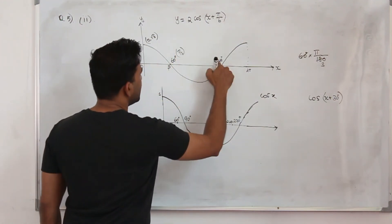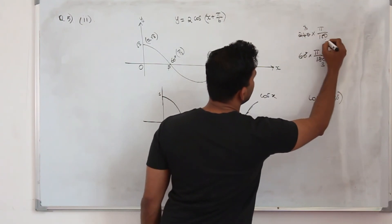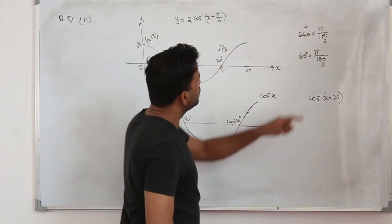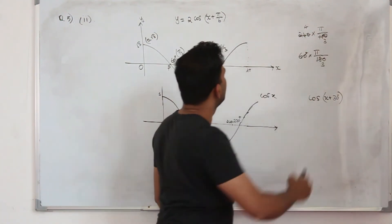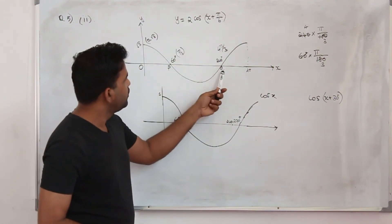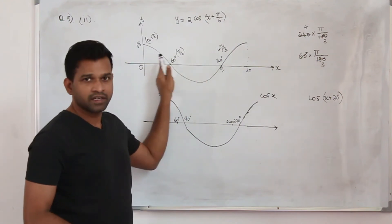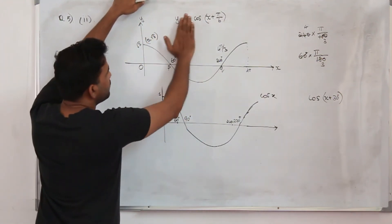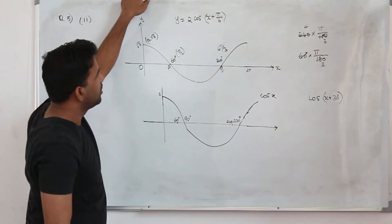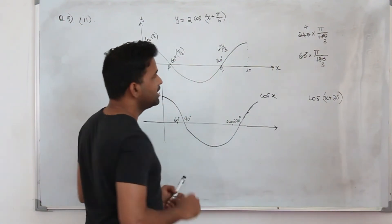Converting to radians: 60 degrees multiplied by pi over 180 gives pi by 3. And 240 degrees multiplied by pi over 180 gives 4 pi by 3. So the value of P is pi by 3 and the value of Q is 4 pi by 3. Multiplying by a constant k does not affect the x-intercepts, only the y-intercept. So this graph is a translation of cos x by pi by 6 units to the left — 30 degrees — and the new points of intersection are P and Q.